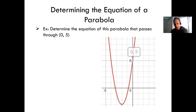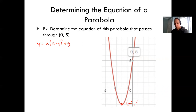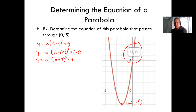Determining the equation of a parabola — given a graph, working backwards. Start with the general vertex form structure. From the graph the vertex is at negative 2 comma negative 3, so I can write y equals a(x minus negative 2) squared plus negative 3. Cleaning that up: y equals a(x plus 2) squared minus 3. To find a, you need another piece of information — I can't do it without at least one other point.